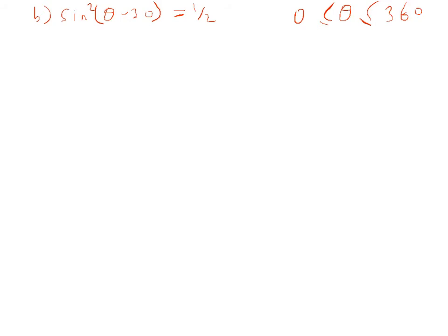Okay, so let's have a go at this question here, part B. So we've got sin squared theta minus 30 equals 1 half. And the first thing we could do is get rid of the square root sign. So we've got sin squared theta minus 30 equals 1 over 2. And if we get rid of the square root sign, we just get 1 over the square root of 2. And we'll get two values, positive and negative.